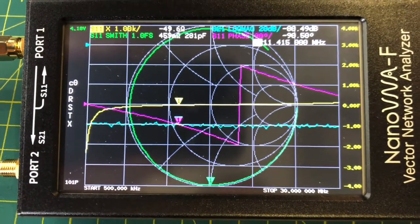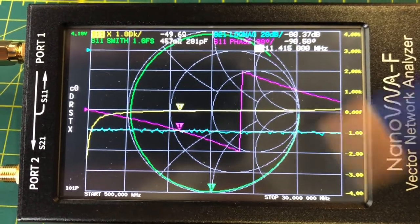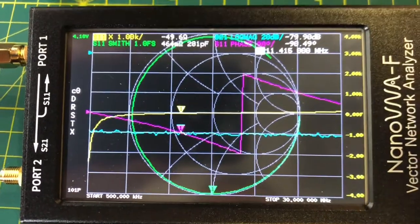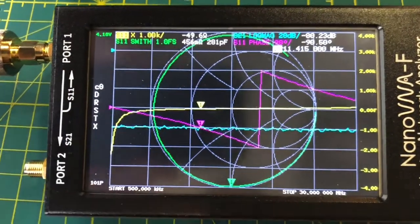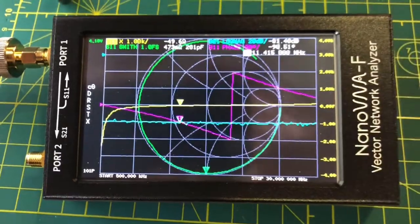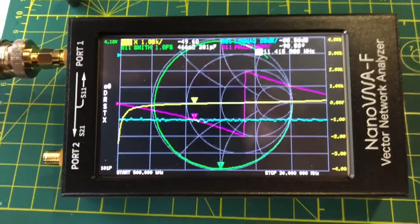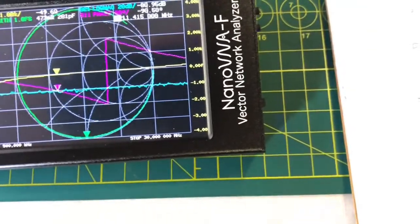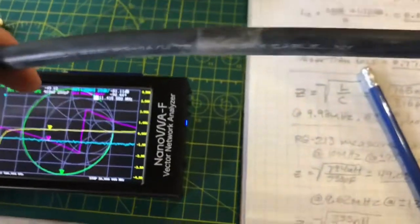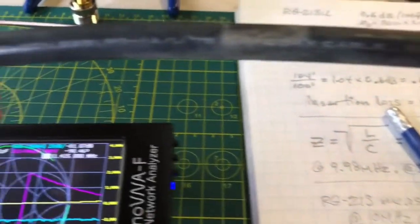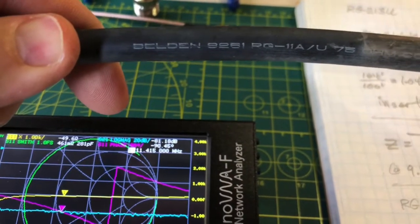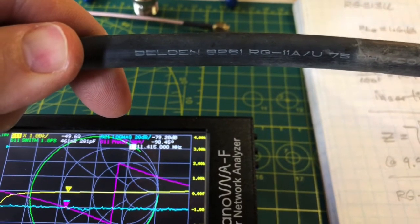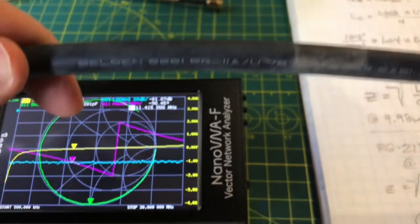Here's what I've done: I've calibrated the nano VNA using the cal standards right off the ports here, and then I've gone and found a chunk of RG-11 coax cable. This is a Belden RG-11 and that is a characteristic impedance of 75 ohms.